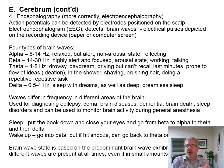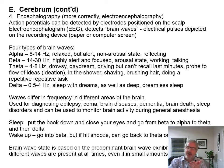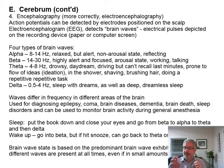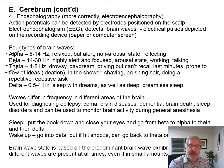Electroencephalography — EEG — is detecting brain waves, which are electrical pulses. Neurons are firing action potentials down the axons, and you have electrical charges that you can detect in the brain as those charges travel down the nerve fiber. There are four types of brain waves you can detect: alpha, beta, theta, and delta waves.